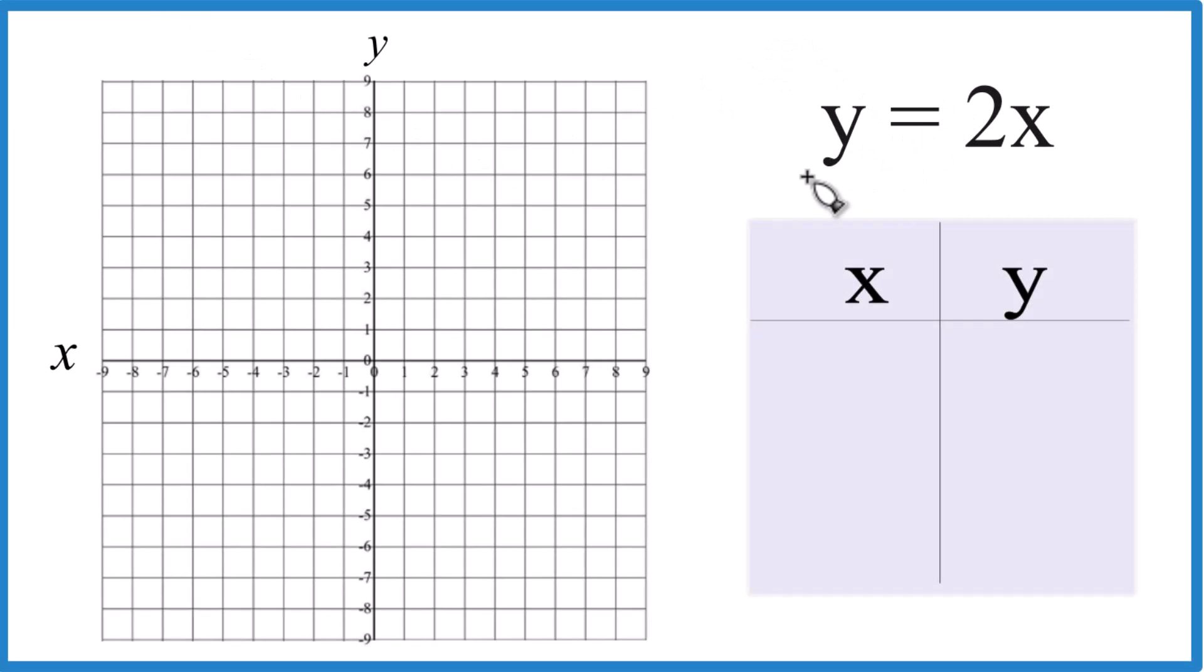If you need to graph the line y equals 2x using a table of values, here's how you do it. We're going to put values in for x here and then get a value for y, and then we'll just graph those on the plot here on graph paper and we'll have our equation or a line for y equals 2x.